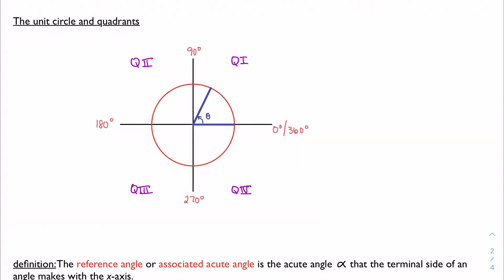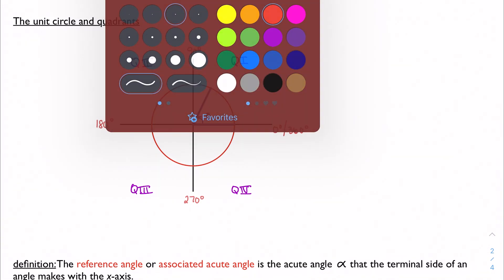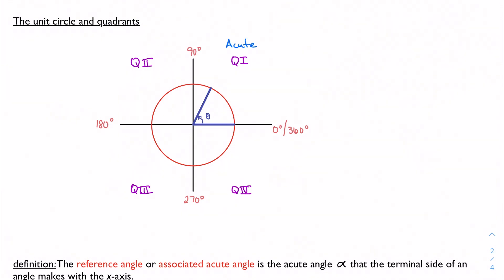What happens in each of these quadrants is: in quadrant 1, I have acute angles. In quadrant 2, these are all obtuse angles. In quadrants 3 and 4, IB groups these together and we call them all reflex angles — any angle larger than 180 but smaller than 360.